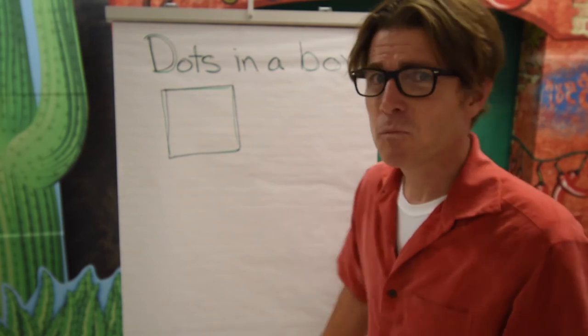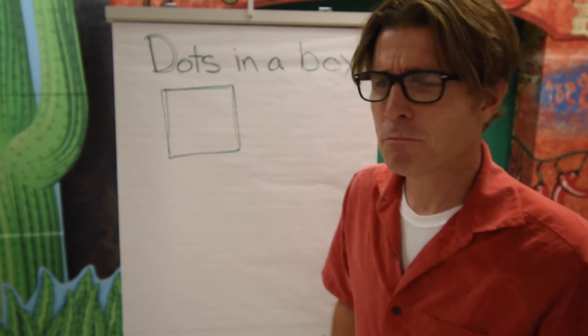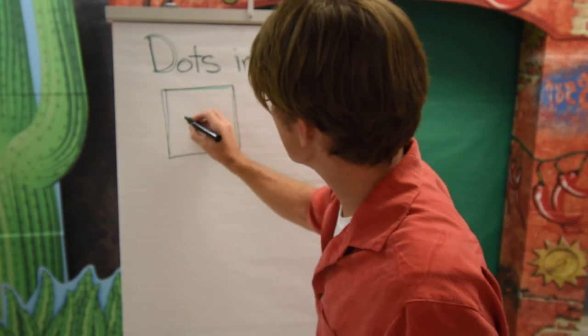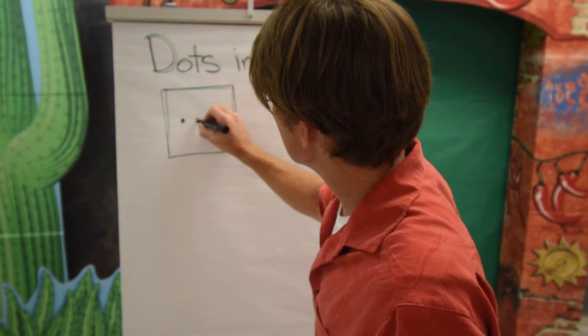First of all we have to draw a box. Actually it's a square, but dot-in-the-square? Anyway, what we have to do is draw three dots in the box.